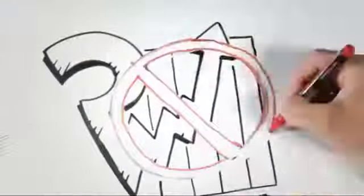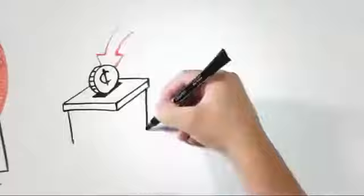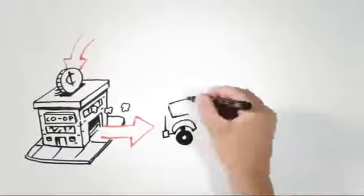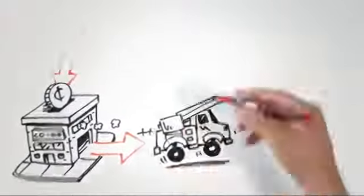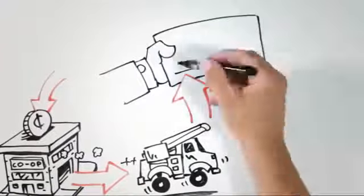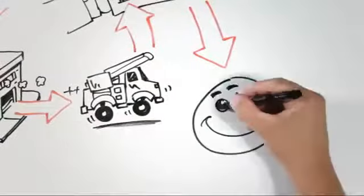So how do cooperatives work? First off, cooperatives are not-for-profit. Money comes in from members when they pay their electric bills. Money goes out to pay co-op expenses. A little bit is set aside for emergencies and the future. Any leftover is returned to members.